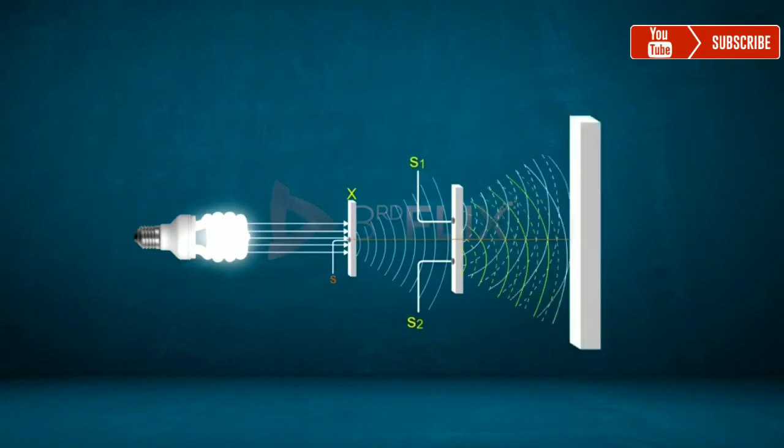Spherical waves emerging from the two pinholes, S1 and S2, form a spherical interference pattern of varying intensity on the screen, MN.